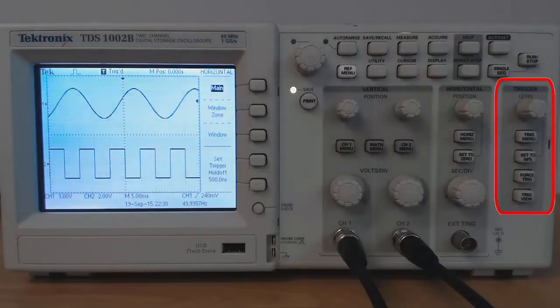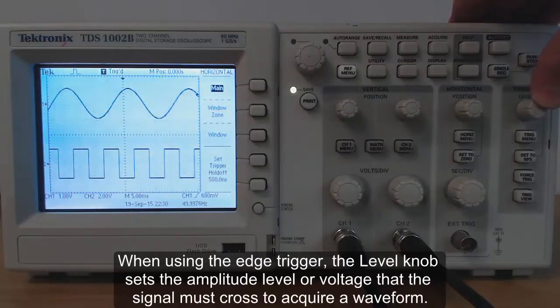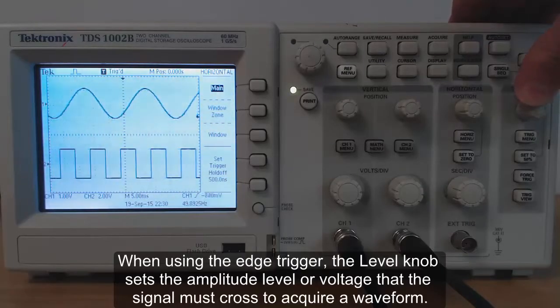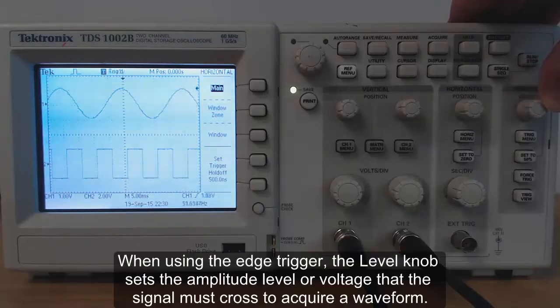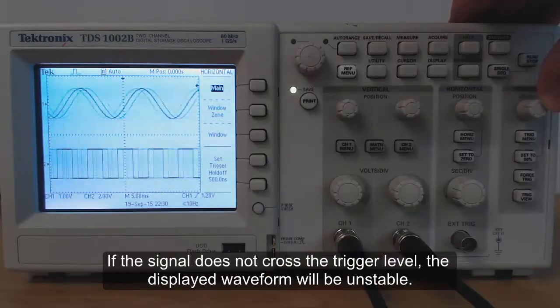Next we have the trigger controls. At the top is the level knob. When using the edge trigger the level knob sets the amplitude level or voltage that the signal must cross to acquire a waveform. If the signal does not cross the trigger level the displayed waveform will be unstable.